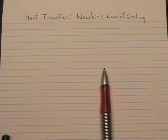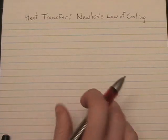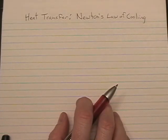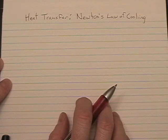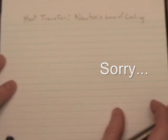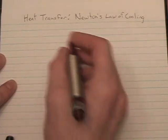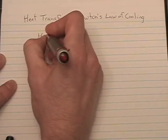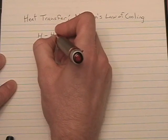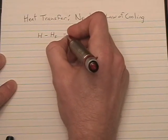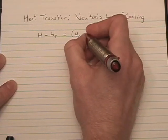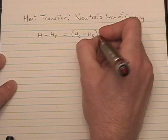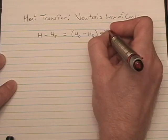On pages 446 and 447 of your textbook, there is a discussion of Newton's Law of Cooling and Heat Transfer. In the reading, they go ahead and derive Newton's Law of Cooling, which is h minus h sub s equals h naught minus h sub s times e to the negative kt.